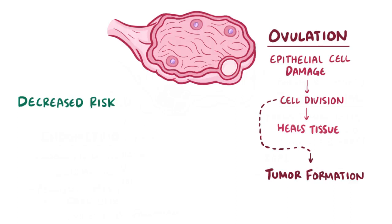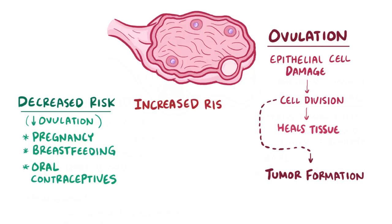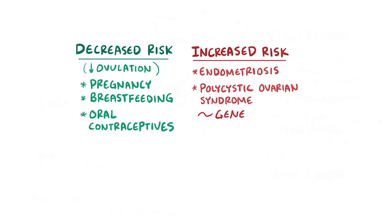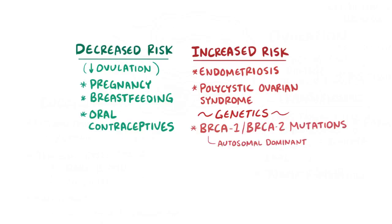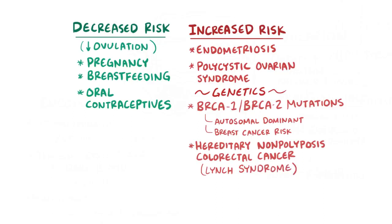Things associated with a decreased risk of ovarian cancer include things that reduce the number of ovulatory cycles, like pregnancy, breastfeeding, and oral contraceptive use. On the flip side, some things associated with an increased risk include certain medical conditions like endometriosis and polycystic ovarian syndrome. There are also genetic risk factors, like having the BRCA1 or BRCA2 mutation, which are both autosomal dominant mutations that carry an increased risk of breast cancer as well. There's also hereditary nonpolyposis colorectal cancer, also known as Lynch syndrome, which increases the risk of developing a number of cancers, including ovarian cancer.